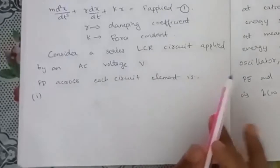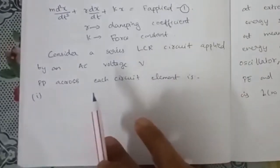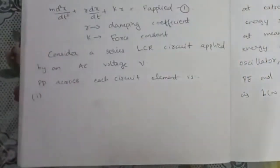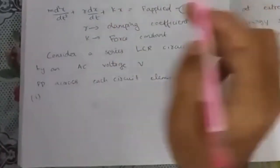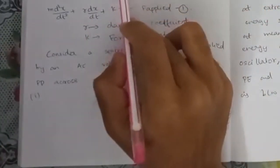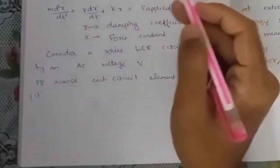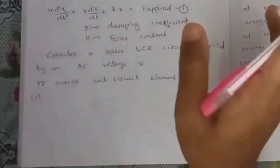Consider a series LCR circuit applied by an AC voltage V. We will consider this LCR circuit with voltage V. AC voltage is alternating current.